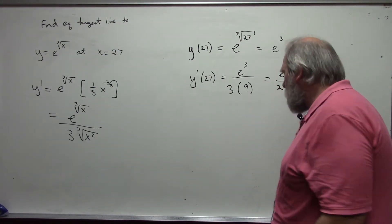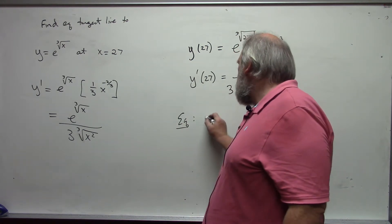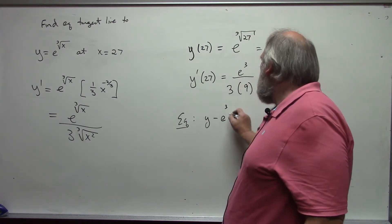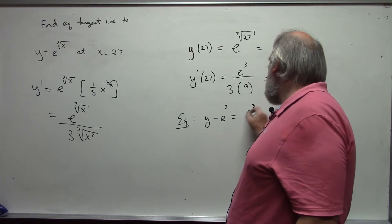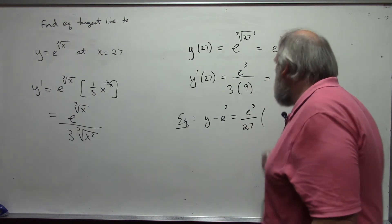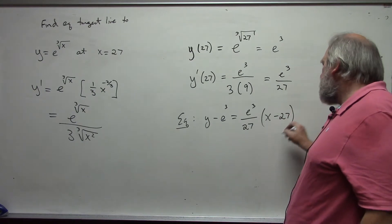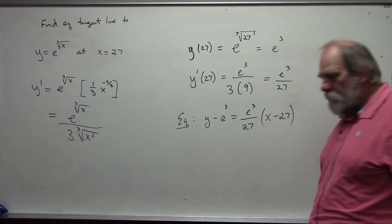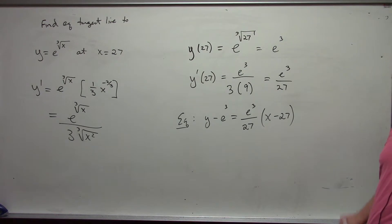So my equation in this case is y minus e cubed equals e cubed over 27 times the quantity x minus 27. You can leave it like that or solve for y if you wish.